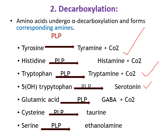Decarboxylation of glutamic acid leads to production of GABA, which is an inhibitory neurotransmitter. Deficiency of vitamin B6 leads to decreased production of GABA, which can cause convulsions — that is, epileptic seizures in infants and children. Two more examples are decarboxylation of cysteine to taurine and decarboxylation of serine to ethanolamine. All these decarboxylation reactions require pyridoxal phosphate as coenzyme.